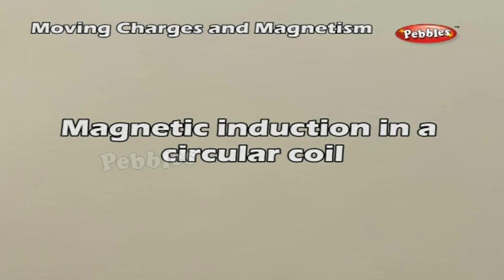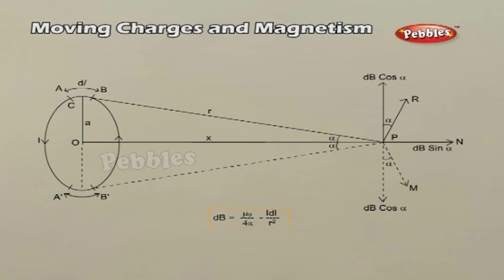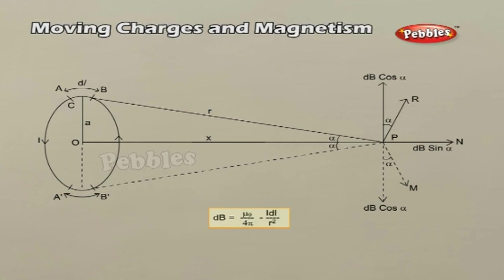Magnetic induction in a circular coil. Consider a circular coil of radius A with a current I. P is a point along the axis of the coil at a distance X from the center O. AB is an infinitesimally small element of length dL. C is the midpoint of AB and CP equals R. According to Biot-Savart Law, the magnetic induction at P due to the element dL is shown above; the direction of dB is perpendicular to the current I, dL, and CP — therefore along PR, perpendicular to CP. Considering the diametrically opposite element A'B', the magnitude of dB at P due to this element is the same as that for AB, but its direction is along PM.